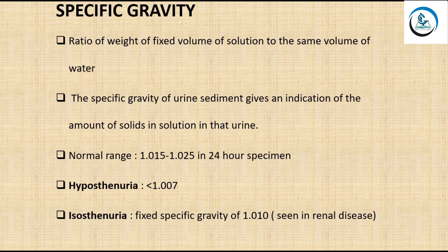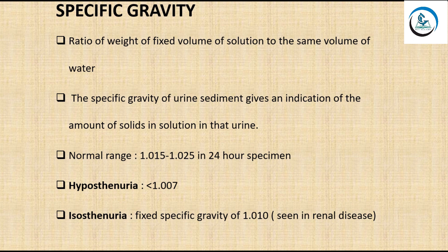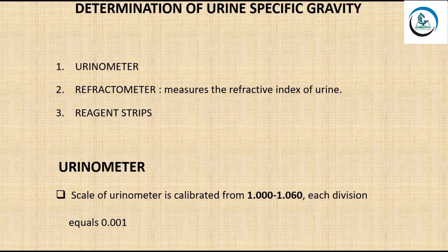Specific gravity is the ratio of the weight of a fixed volume of solution to the same volume of water. It gives an indication of the total amount of solids in solution in the urine. The normal specific gravity is 1.015 to 1.025 in a 24-hour specimen. If less than 1.007, the condition is called hyposthenuia. In renal disease, specific gravity is fixed at 1.010, which is referred to as isosthenuria.